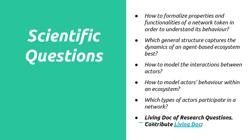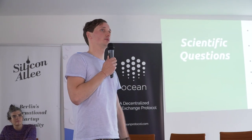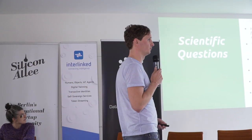This is what we'll discuss in the workshop. In order to do that we need to ask ourselves: how do we formalize the properties and functionalities of a network? What general structure does it have? Who are the agents - the actors? What actions take place in the action space? We started defining these questions and would be very happy if you could contribute - have a look at this document and try to contribute from your perspective.